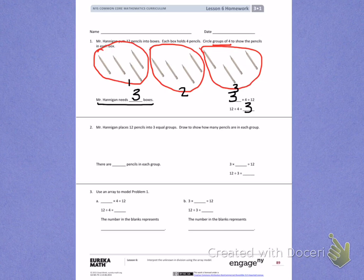Number 2. Mr. Hannigan places 12 pencils into 3 equal groups. Draw to show how many pencils are in each group. Now this time, I still have 12 pencils. So to start, I'm going to draw 12 lines. Those will be my pencils. This time, I need to put them into 3 equal groups. So not groups of 3, but 3 equal groups.